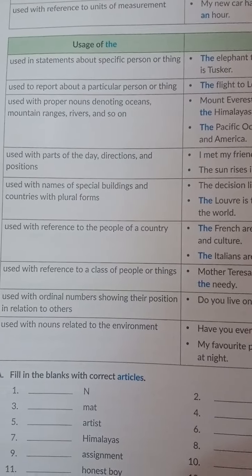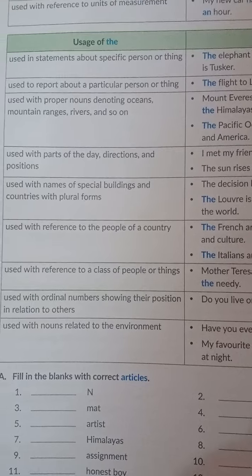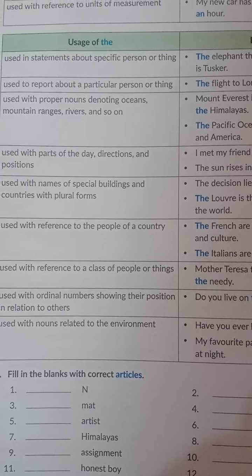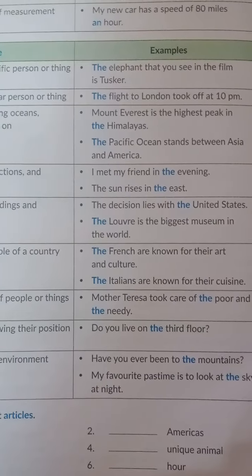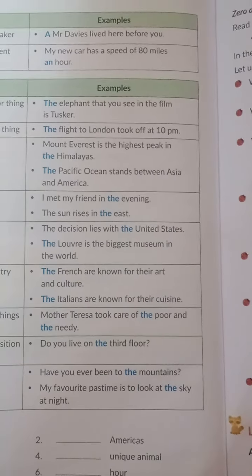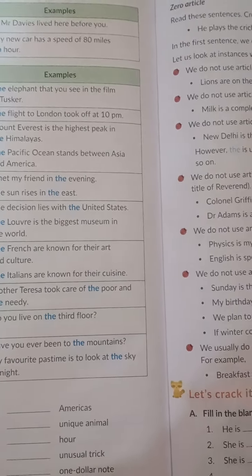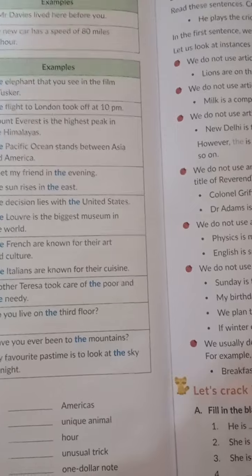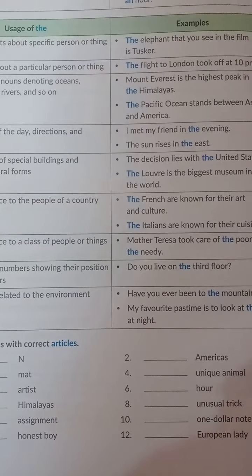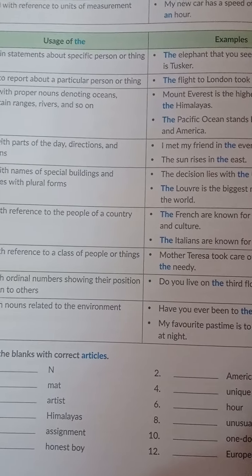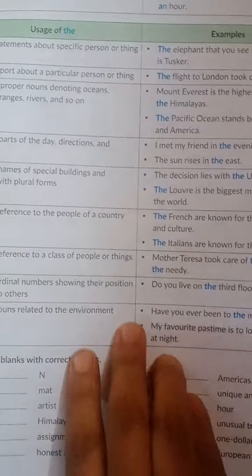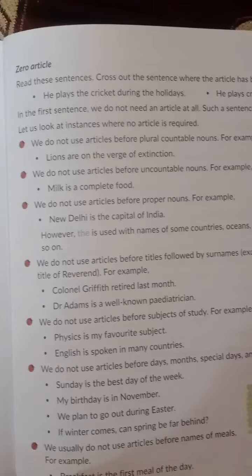'The' is said to be a definite article because it always definitely specifies a particular item or a particular noun. For example: 'The elephant that you see in the film is Tusket,' 'The flight to London took off at 10 AM,' 'Mount Everest is the highest peak in the Himalayas.' Where it is specifying and particularizing the noun, we use 'the'.